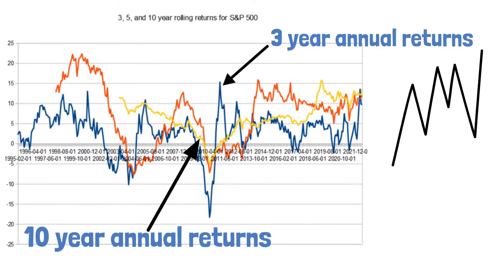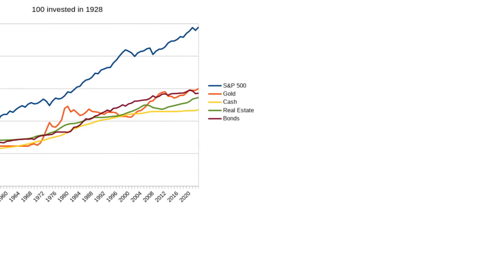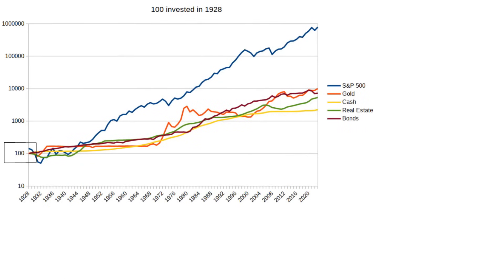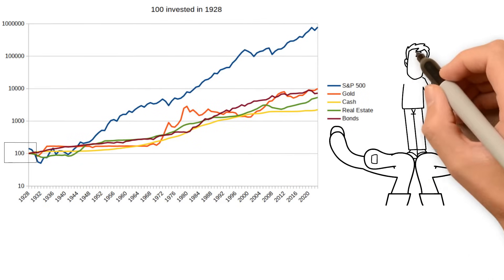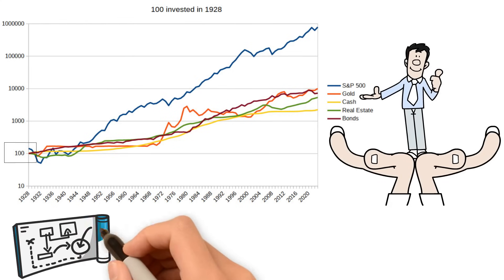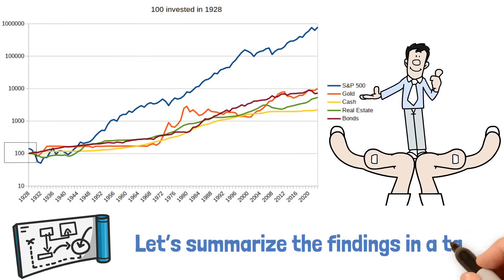Let's look at the performance over the last century for each asset class. Clearly, if you invested $100 in 1928, we see that stocks outclassed bonds, gold, real estate, and cash. Because the chart is logarithmic, the enormous differences don't show as well, so let's summarize the findings in a table.